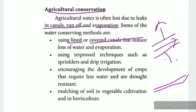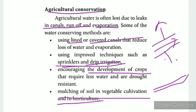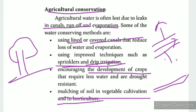Using improved techniques such as sprinkler and drip irrigation. Encouraging the development of crops that require less water and are drought resistant. This also includes mulching of soil in vegetable cultivation and in horticulture to reduce water loss.